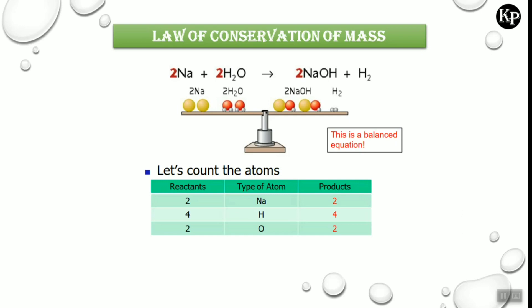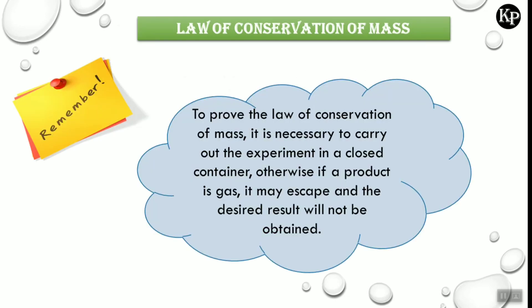Another example: two sodium atoms plus two water molecules gives two NaOH (sodium hydroxide) plus H₂ gas. The reactants and products are the same. Counting atoms: sodium — two atoms in the reactant and two atoms in the product; hydrogen — four atoms in the reactant and four atoms in the product; oxygen — two atoms in the reactant and two atoms in the product.